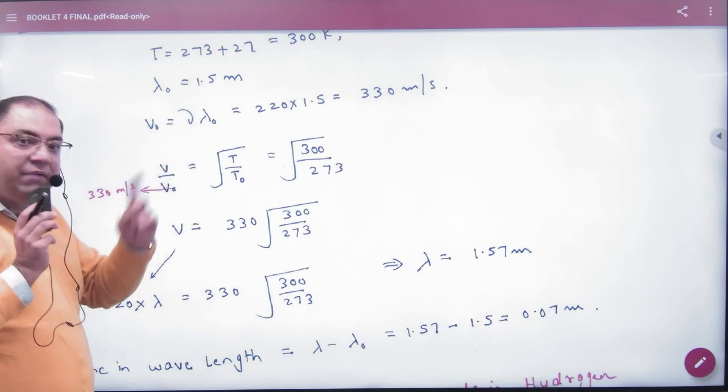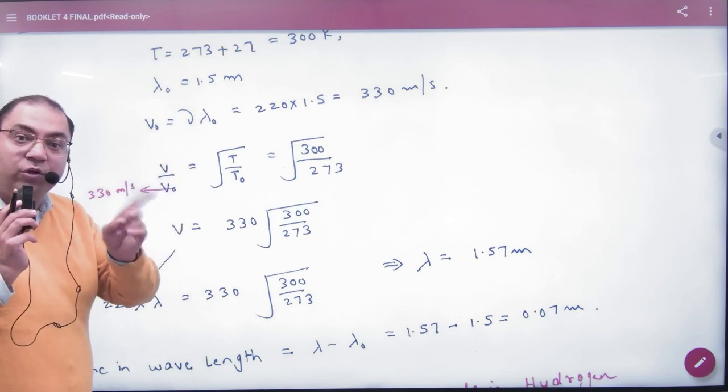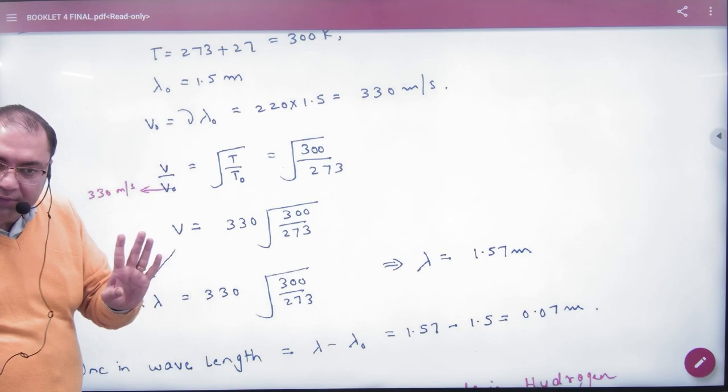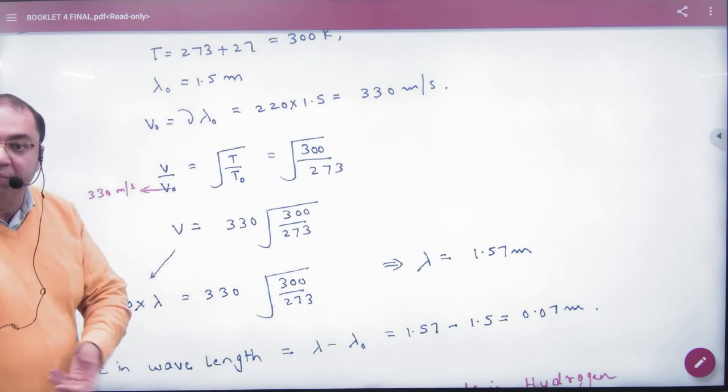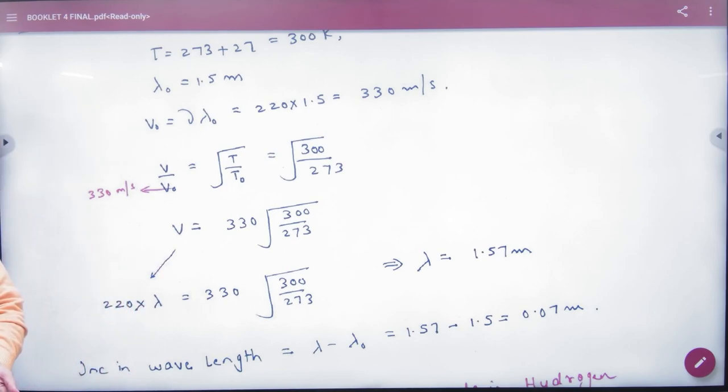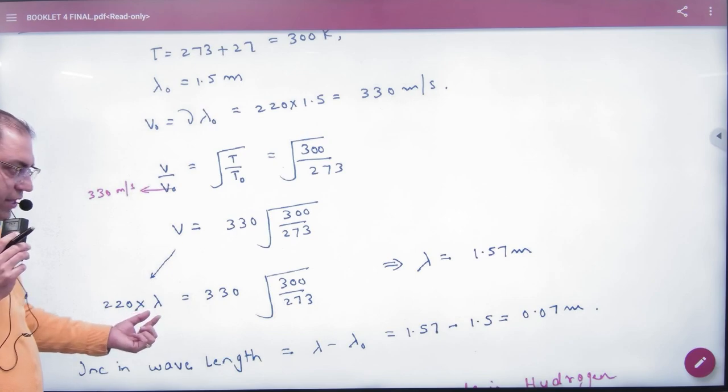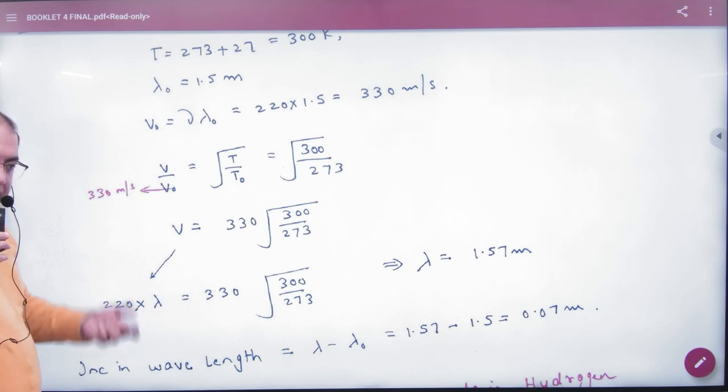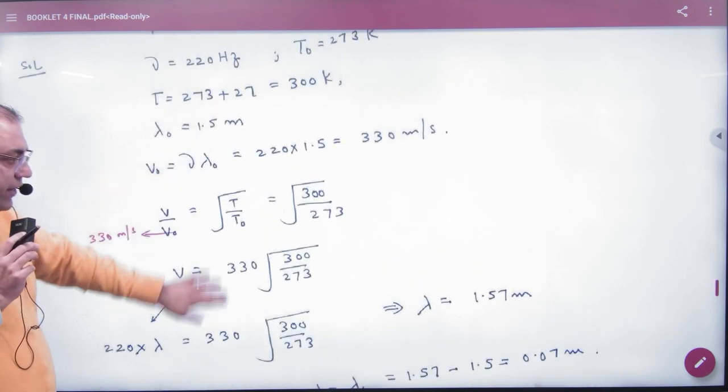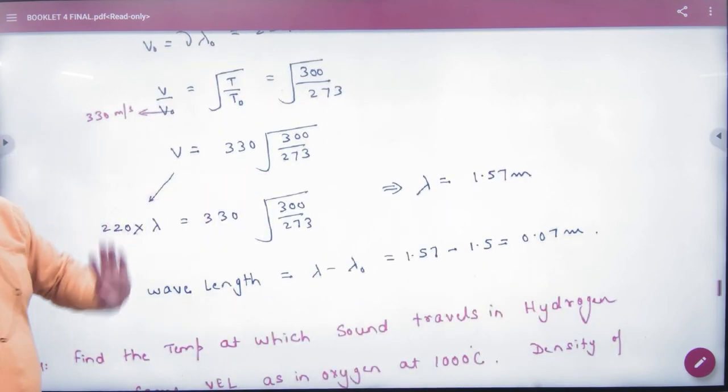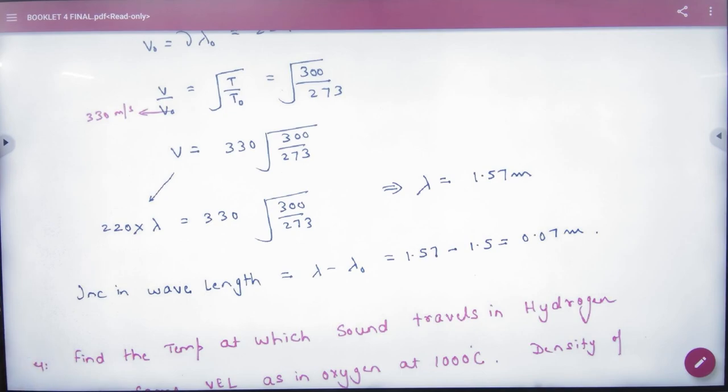Jab temperature 273 hai to velocity 330 nikal ni. Jab temperature 300 hai velocity nikal lenge. Yeh velocity aagay, par hamein velocity thodi nikalni hai, hamein to wave length nikalni hai. V is equal to nu lambda. Nu, frequency purni hi use karni hai kyunki medium ya temperature change karne se frequency kabhi change nahi hoti. Frequency constant hoti hai, woh to medium change karne pe change nahi hoti. Temperature change karne pe bhi hoti, to yaha par kya put karenge: naya lambda. Frequency humein pata hai, lambda aa jayega. Naya to aapko puchha gaya change in lambda. Purana lambda pata chala raha, naya lambda pata chala raha, change aa jaye.